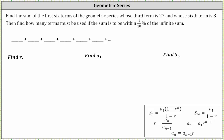We're asked to find the sum of the first six terms of the geometric series whose third term is 27 and whose sixth term is eight. Then we're asked to find how many terms must be used if the sum is to be within one-tenth of a percent of the infinite sum.